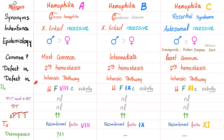The defect in all three is in secondary hemostasis, specifically the intrinsic pathway. Hemophilia A involves factor 8, B involves factor 9, C involves factor 11. Platelet count and bleeding time are normal across the board because primary hemostasis is fine. PT is normal because the extrinsic pathway is intact. However, APTT is prolonged in all three because factors 8, 9, and 11 are all part of the intrinsic pathway. Treatment: recombinant factor 8, 9, or 11 respectively. Desmopressin helps with hemophilia A only, because it helps factor 8 only.